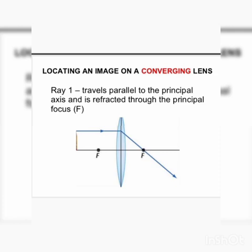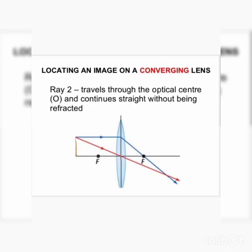Then we have Ray 2, which travels through the optical center. Ray 2, which travels from the object through the optical center, doesn't have any kind of reflection or bending. It will follow a straight path.